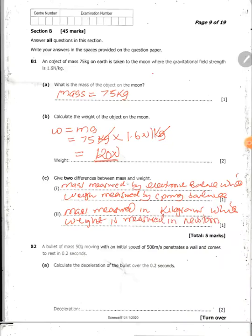Then question B2 says a bullet of mass 50 grams moving with the initial speed of 500 meters per second penetrates a wall and comes to rest in 0.2 seconds. Calculate the deceleration of the bullet at 0.2 seconds. Deceleration, also known as negative acceleration, is equal to the change in velocity over the change in time.